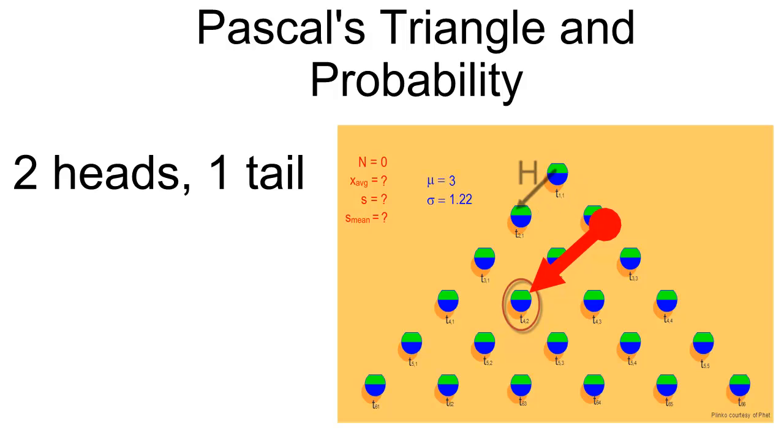So getting a head, throwing another head, and then throwing a tail. And it doesn't matter what order that comes in. Well we know from path counting that there are three possible pathways to get to this position, which would be the same as two heads and one tail.